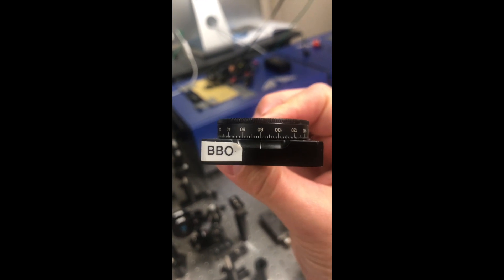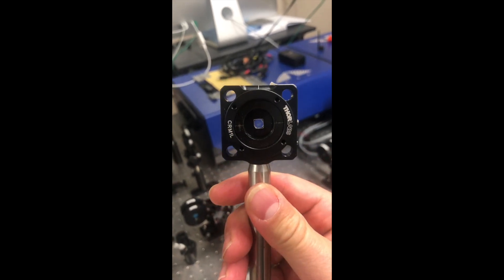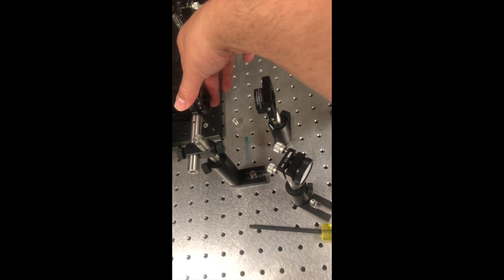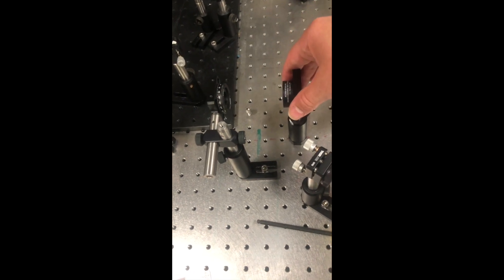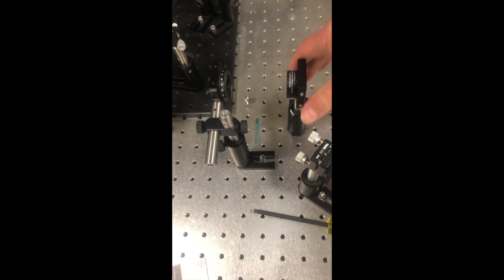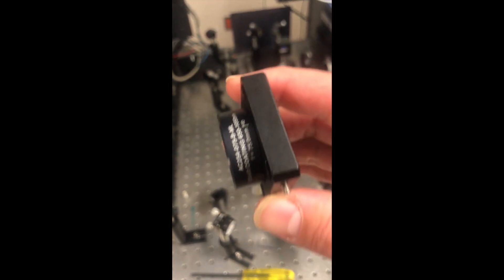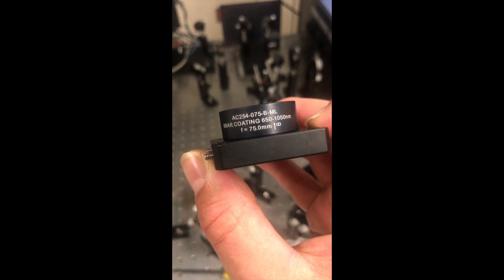The crystal we're going to be using is a BBO crystal mounted in a rotation mount to adjust the angle. We set it right here with a horizontal adjustment for the phase matching angle and right after this lens, and the lens is a 75 millimeter lens that is focusing both beams into the nonlinear crystal in order to generate enough power for us to see a beam at the second harmonic.